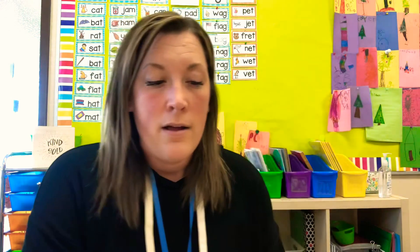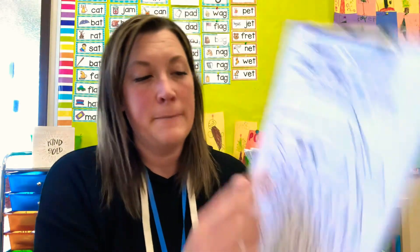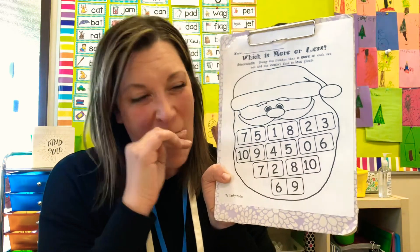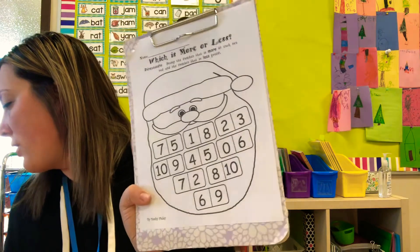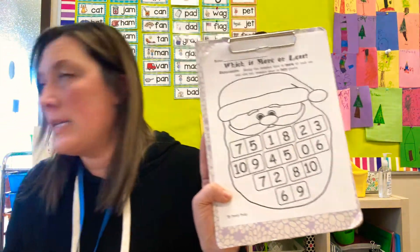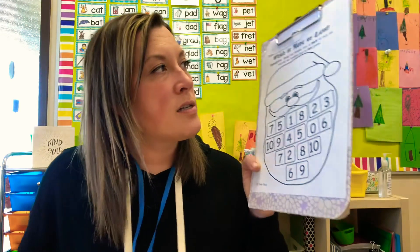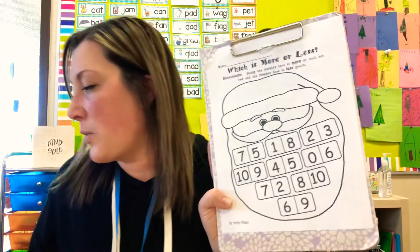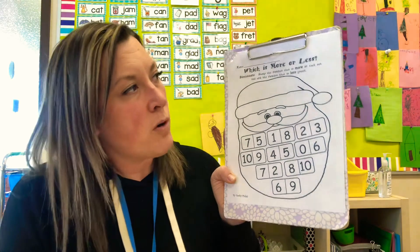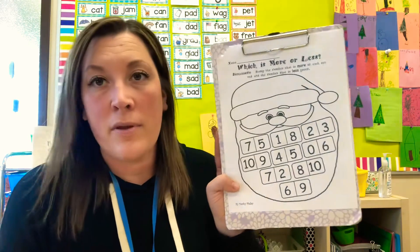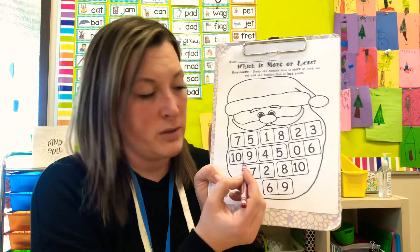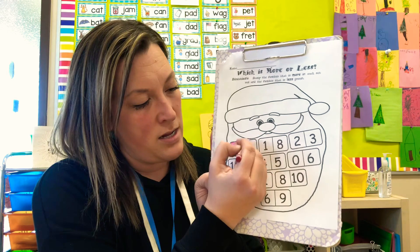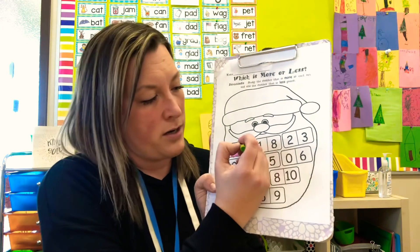For your math worksheet today, your math centers, you have Santa Claus. He has all these little dominoes in his beard. You're going to need a red and a green. It says stamp, but you don't have stamps probably. So color the number that is more in each set red, and the number that is less green. So between a seven and a five, which one's more, which one's bigger — you're going to color that red. Which one's less, you're going to color green.